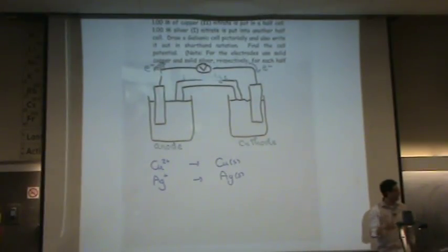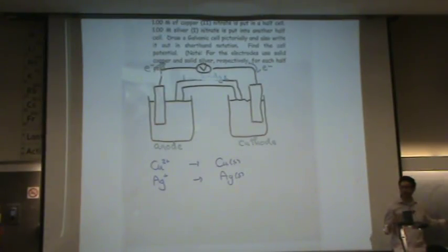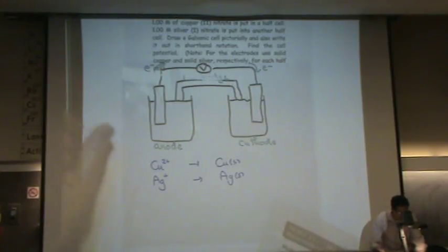Those are going to be part of the salt bridge, and they're essentially spectator ions. So you can balance this going through the method. You can also just look on here if you want.